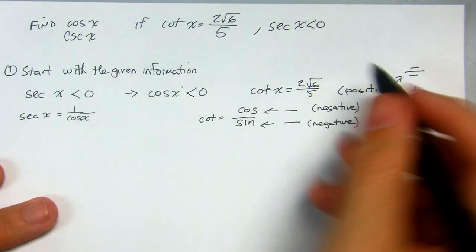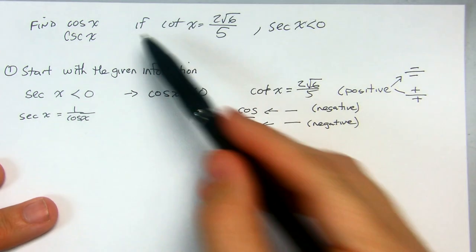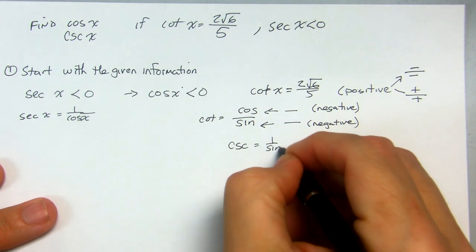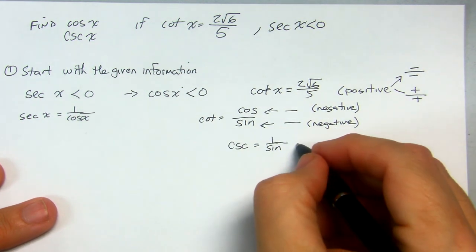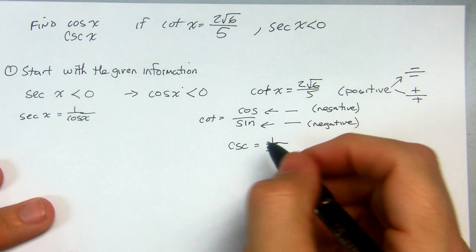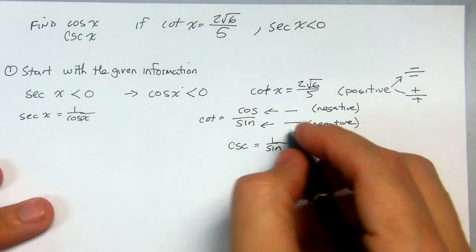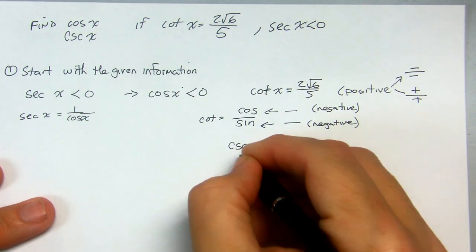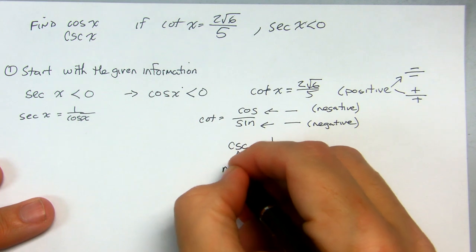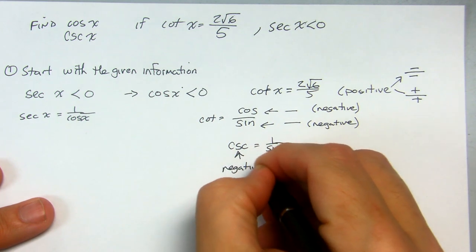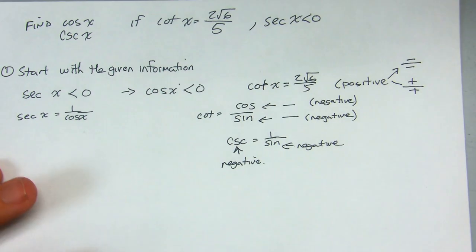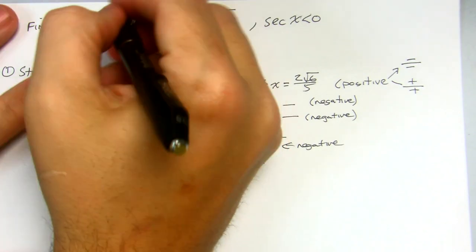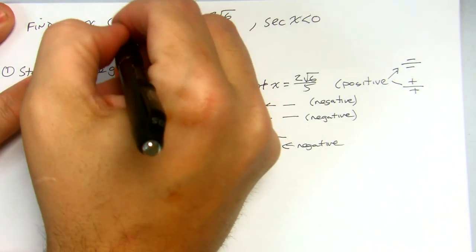Why do we care about the sine? We care about the sine because the cosecant is equal to 1 over sine. So if the cosecant equals 1 over sine and the sine is negative, that tells me the cosecant has to be negative. So the cosine has to be negative and the cosecant has to be negative.